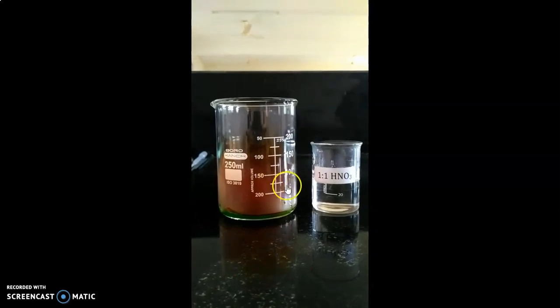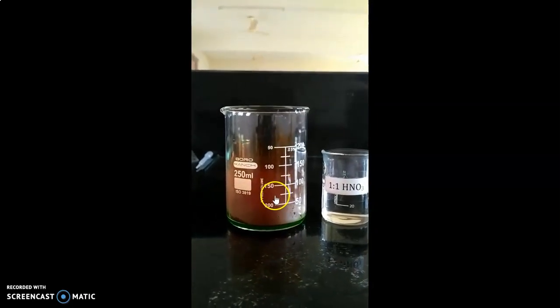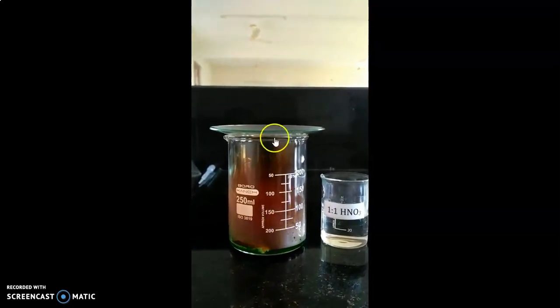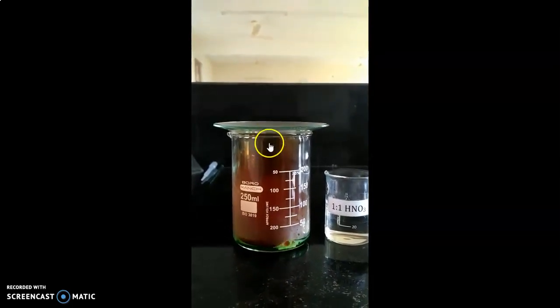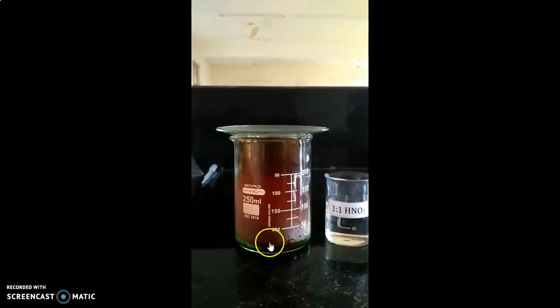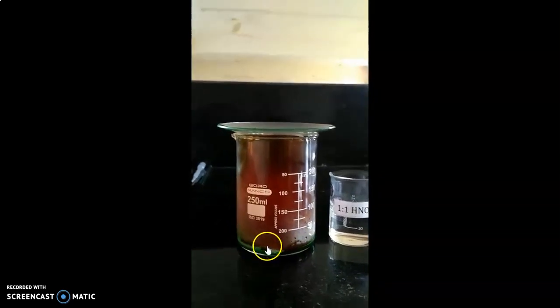After the addition of nitric acid, we can see the brown fumes. It is exothermic, and we have to cover it with the watch glass. We can see the effervescence until all the brass strip dissolves completely.